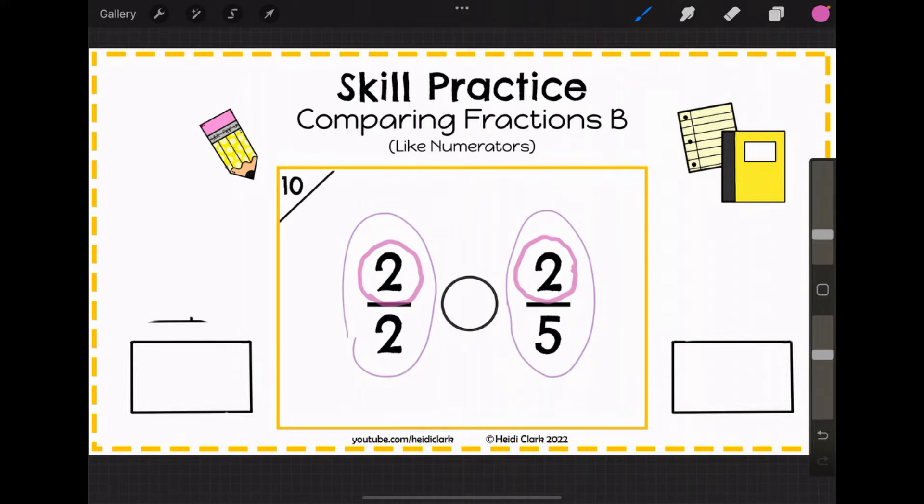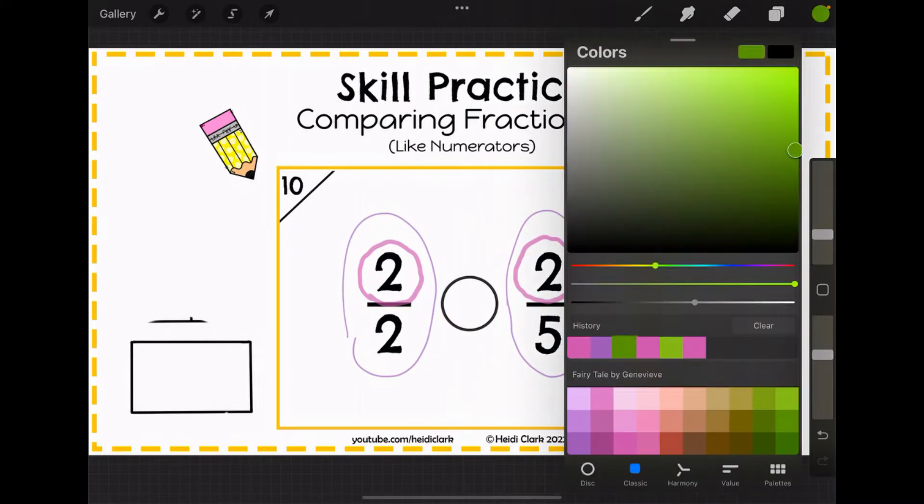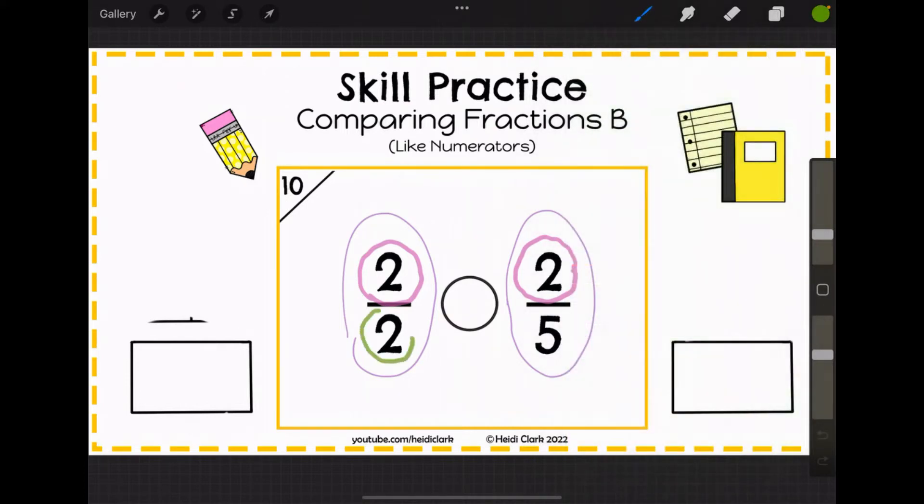So the numerators are the same, so it doesn't actually help us compare. We need to look at the denominators. The denominators help us see how that rectangle is getting split up, and therefore the size of the pieces.